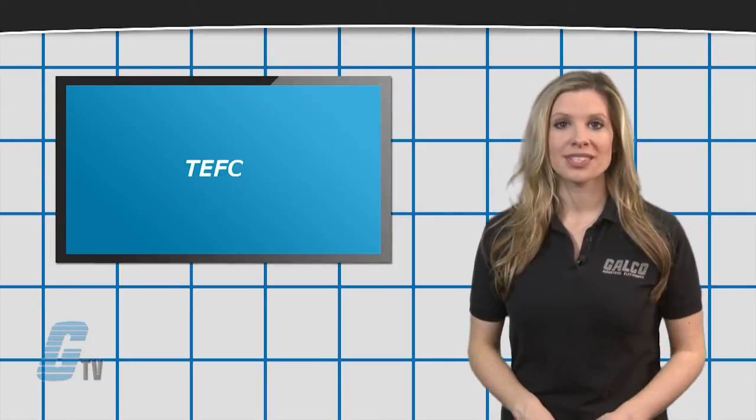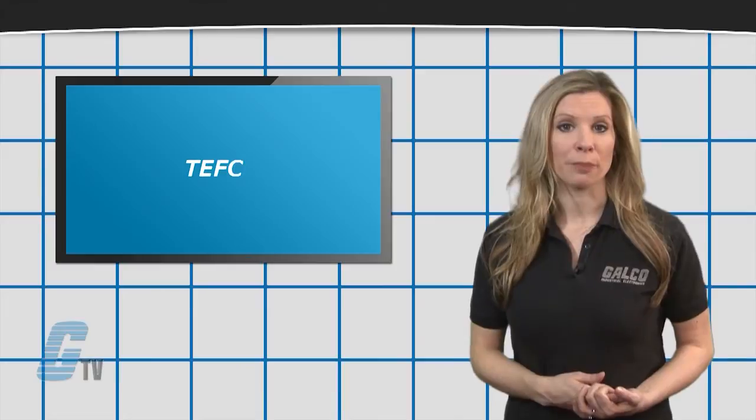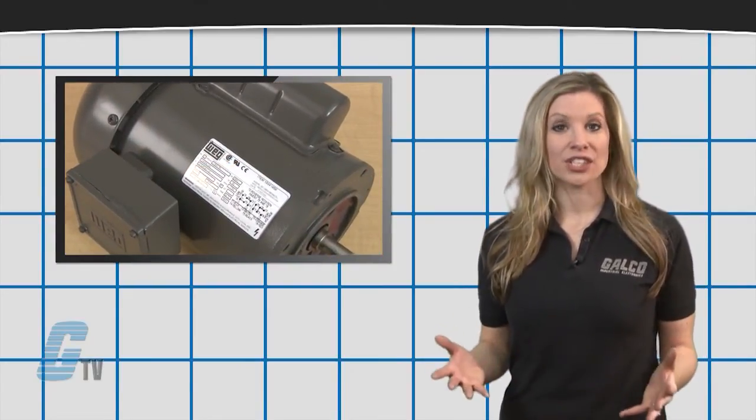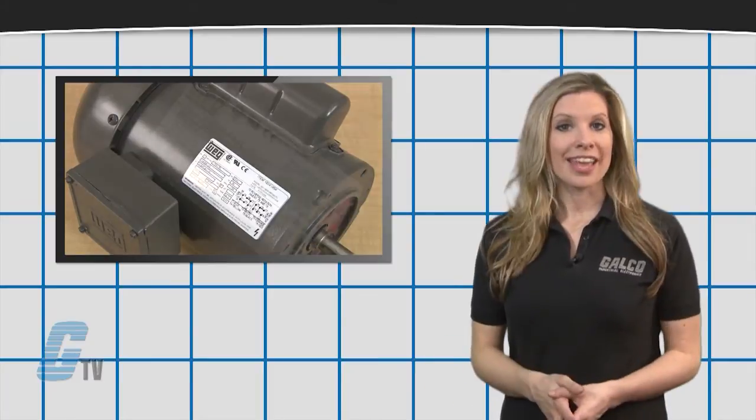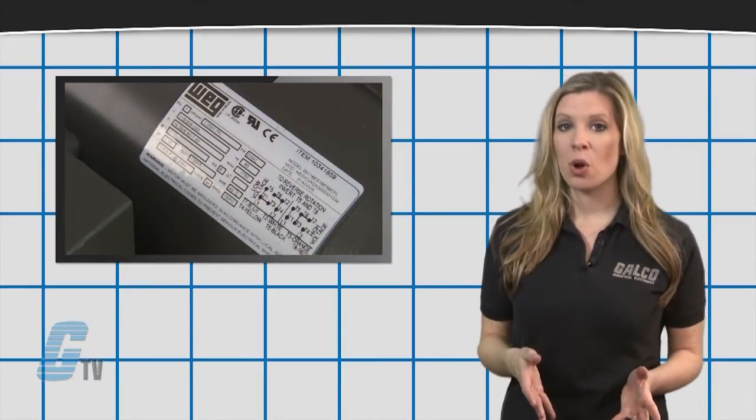TEFC motors use an external fan mounted opposite the drive end of the motor. Like TENV, these motors offer greater protection from outdoor elements. They are able to dissipate heat more quickly than the other types of motors.